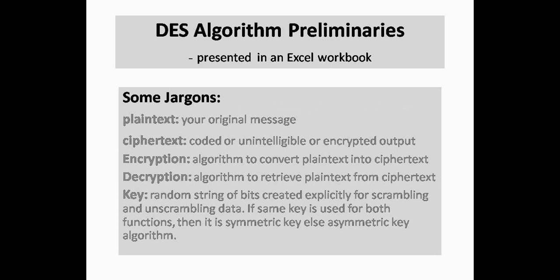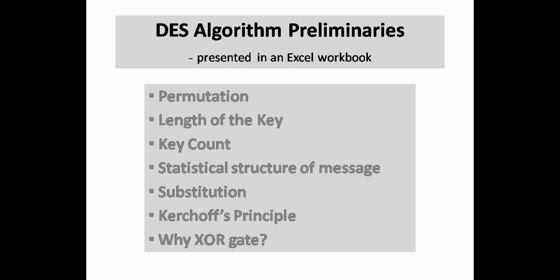Here are some jargons. Your original message is commonly called plaintext. The coded output is called ciphertext, or very crudely just cipher. The process of conversion is the algorithm or encryption process. There are some more jargons that we would try to understand in this presentation using the Excel workbook. All its contents are not exactly about DES but it would help us in understanding DES better.